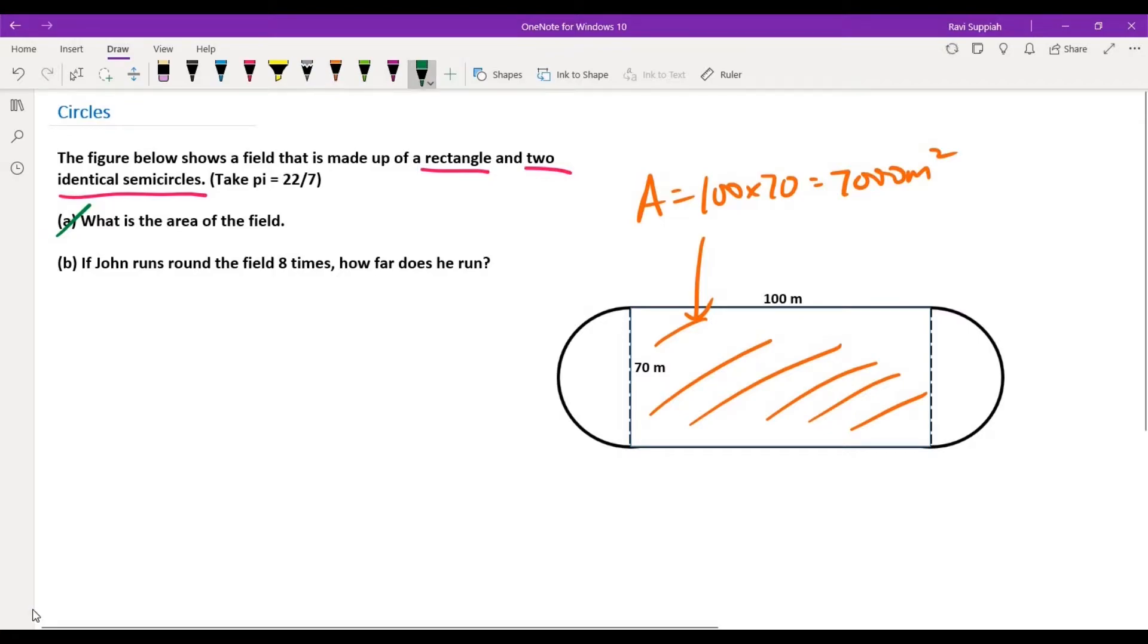Now for the other two parts, they are basically two halves of the same circle, correct, because they are identical semicircles. So we can sort of combine them together and solve for them as a single circle.